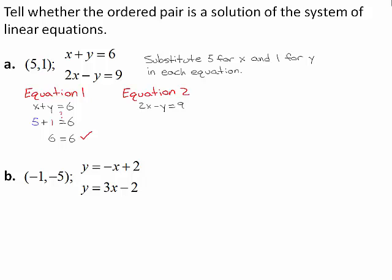Substitute 5 for x and 1 for y. 2 times 5 equals 10, and 10 minus 1 equals 9. Because 9 equals 9 is always true, the ordered pair 5, 1 is a solution of equation 2.